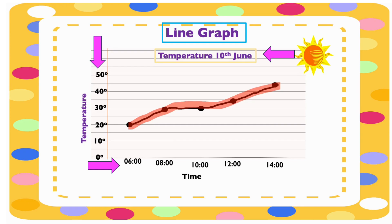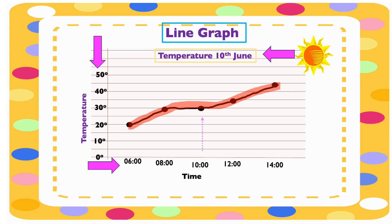Now let's find out the temperature at 10 o'clock — remember this is the time of the day. What is the temperature at 10 o'clock? Let's follow it. The temperature is at 30 degrees, and at two o'clock the temperature went up to 45 degrees.